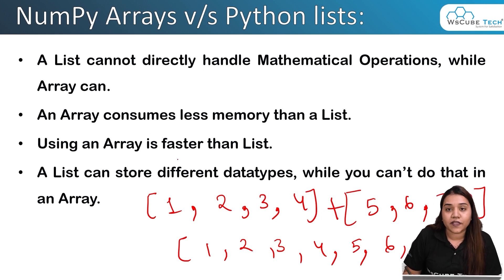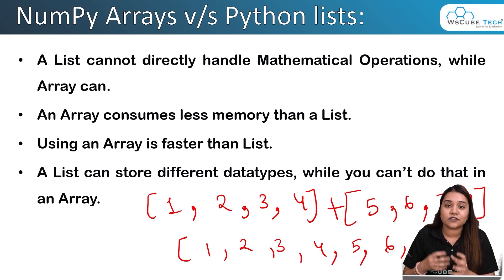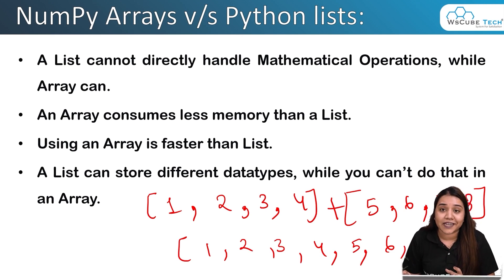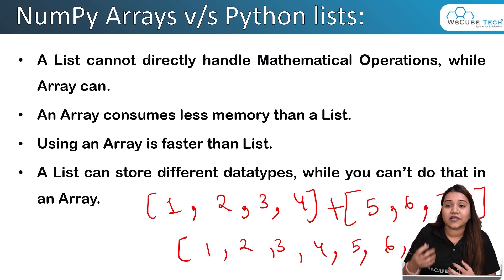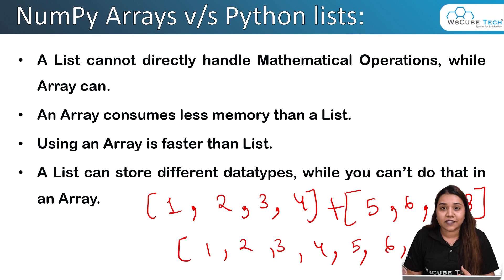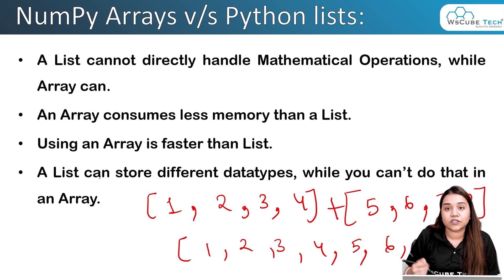Using an array is faster than a list. Arrays are comparatively faster because they do not hold different data types — they hold similar data types — which makes it much easier to work with.